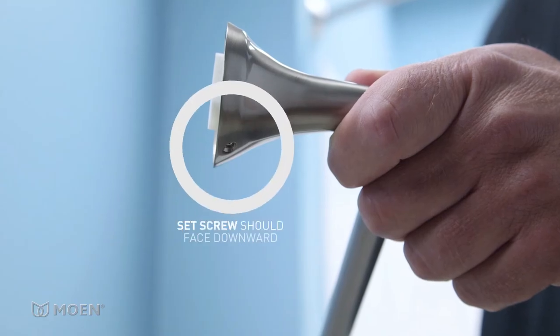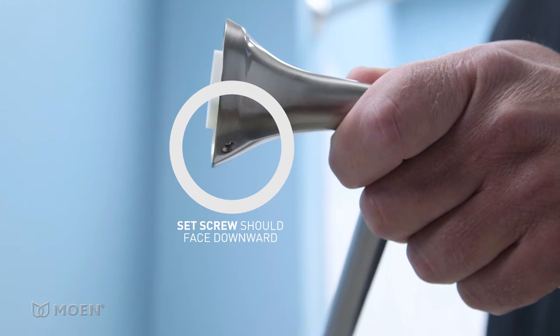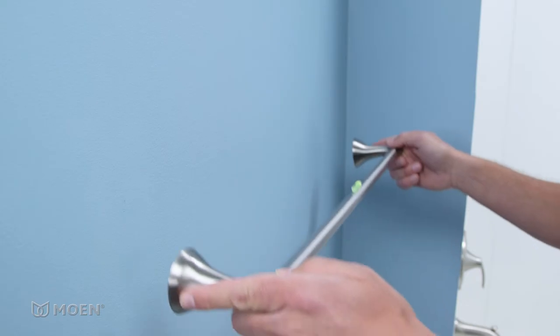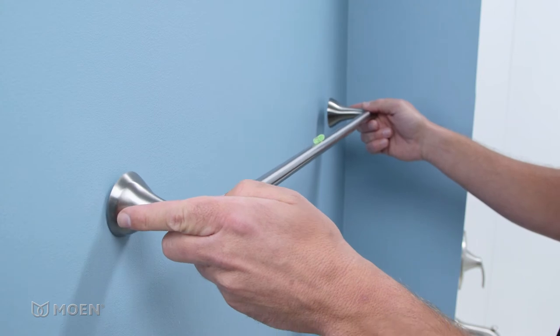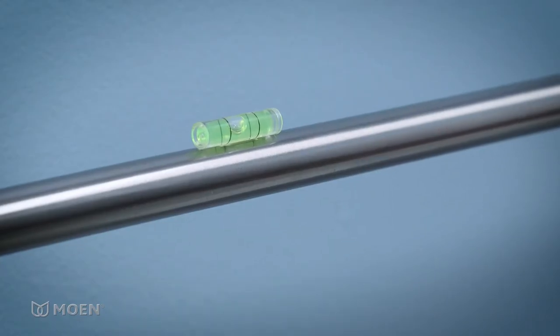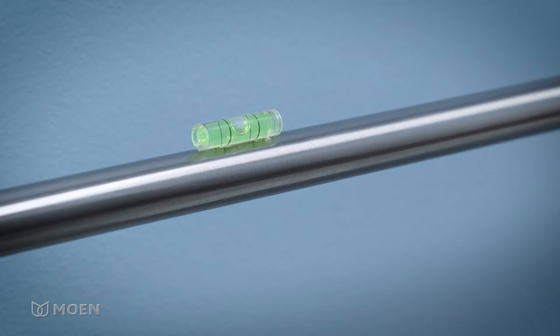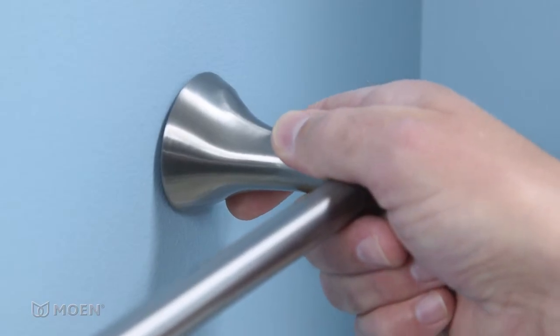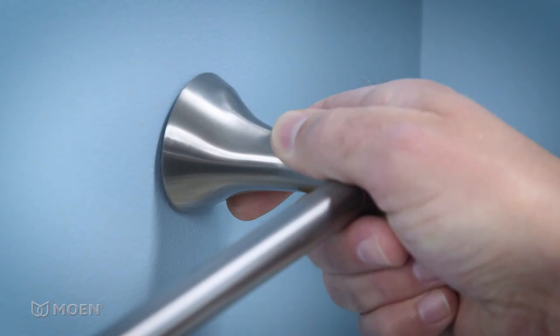Make sure the set screw hole on each post is facing downward and the assembled bar is at a 90-degree angle. Gently place the towel bar against the wall at the chosen location. Use the attached level to ensure it's straight. Press and mark by evenly pushing both posts firmly against the wall for a few seconds. Make sure the assembled bar stays at a 90-degree angle.